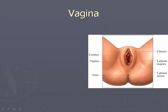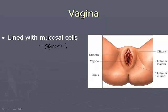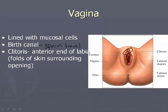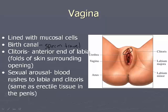The vagina is lined with mucosal cells — this allows sperm to travel, since sperm needs a medium in order to move. It is also the birth canal, where the baby comes through. We also have the clitoris at the anterior end of the labia — the labia being the folds of skin, labia major and minor. During sexual arousal, blood rushes to the labia and clitoris, causing swelling, as it's the same erectile tissue found in the penis.